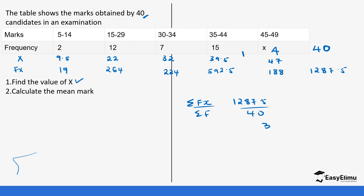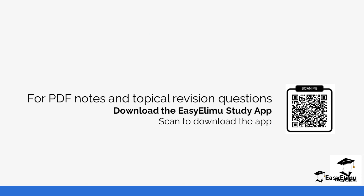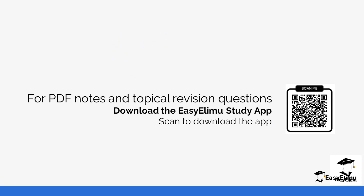Notice that the classes in this question are not equal throughout, so calculating the median and mode will require a different formula than what we discussed — you'll cover that in Statistics Two. Check out the app for more practice questions and notes on how Statistics One questions are usually asked. See you in the next lesson.